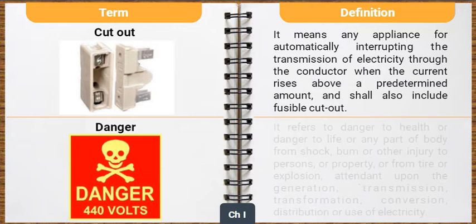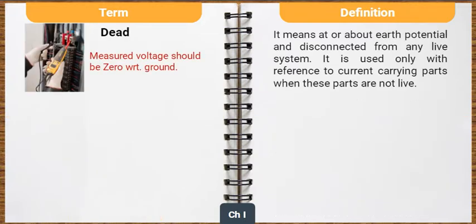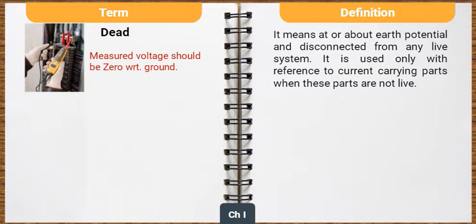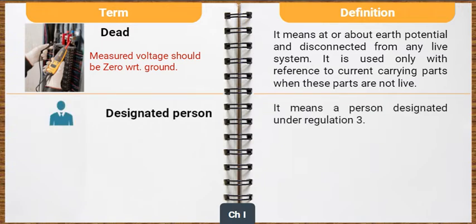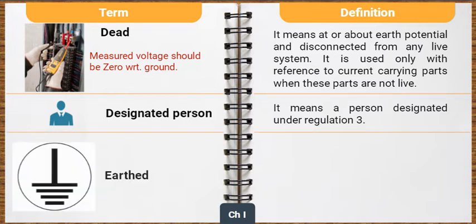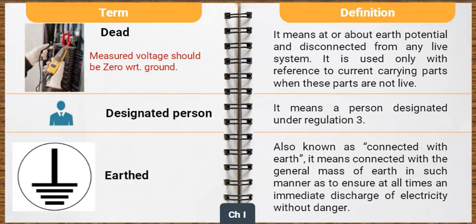Danger refers to danger to health or danger to life or any part of the body from shock, burn, or other injury to persons or property, or from fire or explosion, attendant upon the generation, transmission, transformation, conversion, distribution, or use of electricity. Dead means at or about earth potential and disconnected from any live system; it is used only with reference to current carrying parts when these parts are not live. Designated person means a person designated under regulation 3. Earthed, also known as connected with earth, means connected with the general mass of earth in such a manner as to ensure at all times an immediate discharge of electricity without danger.